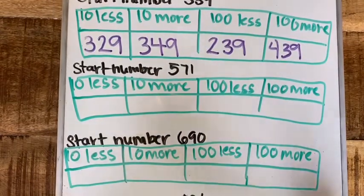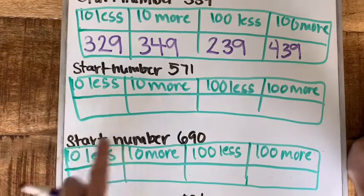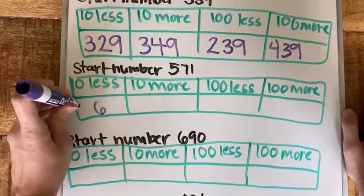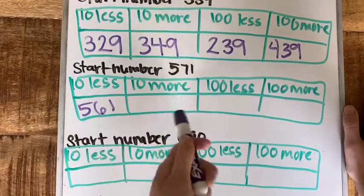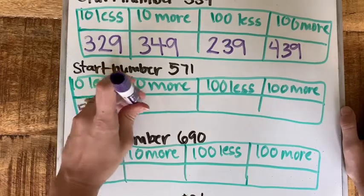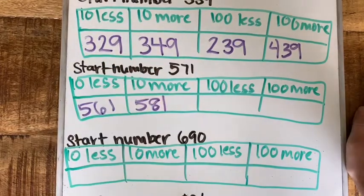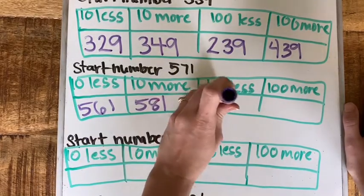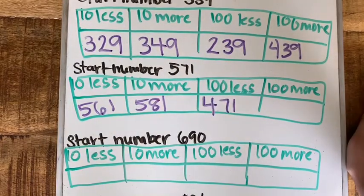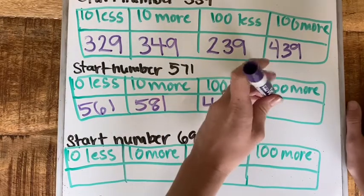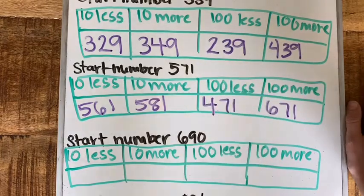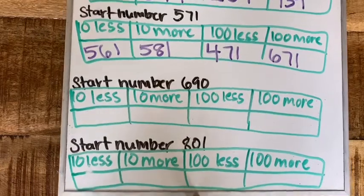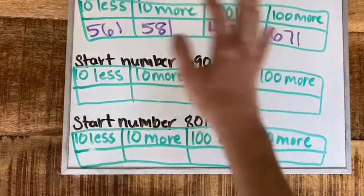Our next number is 571, so ten less, we have seven tens, take one away, we'll have six tens, and our hundreds and ones don't change. Ten more, so 70 plus ten is 581. And 100 less, we have five groups of a hundred so we're taking one away, now we only have four groups of 100 and the 71 is still the same. 100 more than 500 is 600 and their 71 are the same because we're not adding any tens or ones.